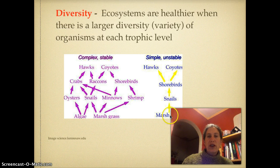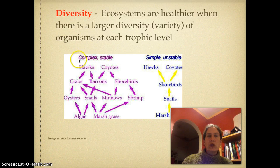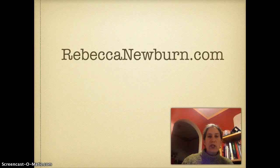Whereas if there was a problem with the marsh grass, pretty much everything collapses. Simple systems are unstable. In our modern agriculture system, we have gone to a very simple and hence unstable system. One of the reasons we're doing our food forest is to make a more complex and hence stable system. If you need more information, you can go to RebeccaNewbern.com and there will be links for additional resources. Have a lovely day, bye.